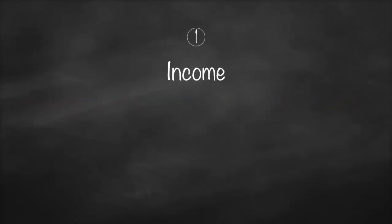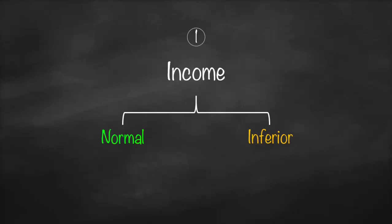One factor is income. When we talk about income we need to differentiate between two types of goods: normal goods and inferior goods. A normal good is one where if we have a higher income we will consume more, and vice versa if income drops, consumption drops. This means demand will be lower — a positive relationship between income and demand.